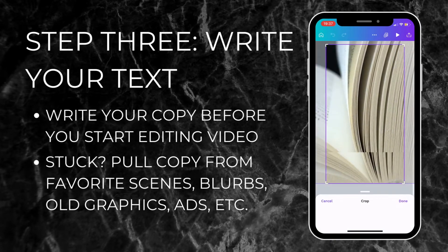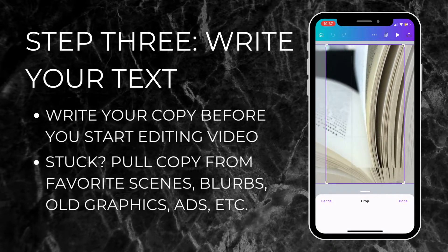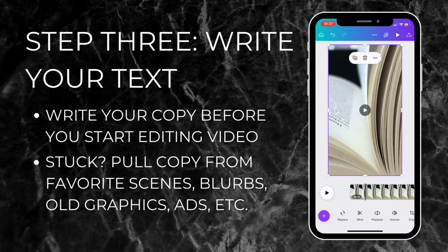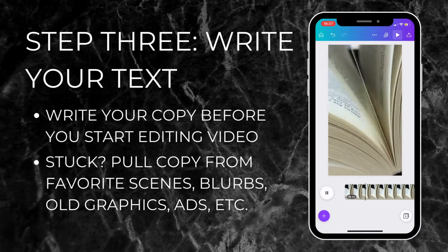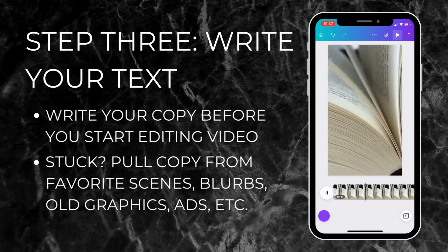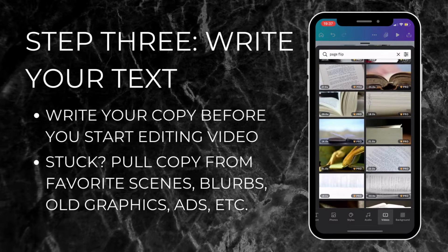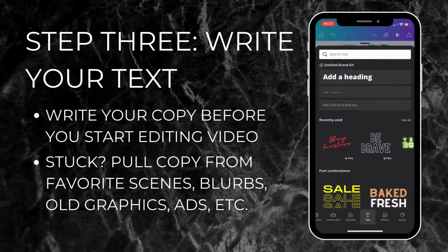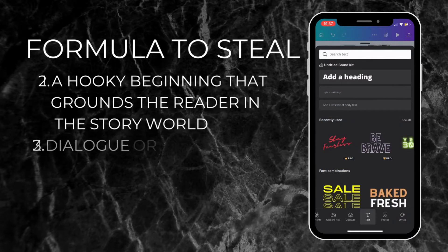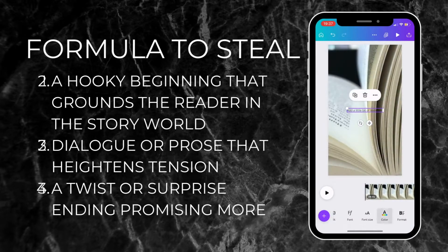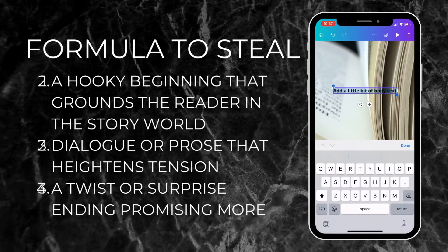Coming up with marketing copy like this can be a frustrating process, but there is kind of a formula to it and you don't have to reinvent the wheel. What you want to do is go to the juiciest scenes in your book — the turning points, the big realizations, the shifts, the plot twists. If you go back to your outline or your blurb, you should be pretty easily reminded of what those are. Pull from those scenes: a hooky beginning that grounds the reader for your first set of text, then add some dialogue or prose that heightens the tension, and finally end with a twist.